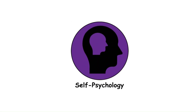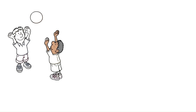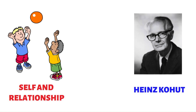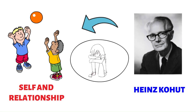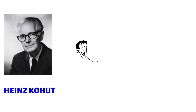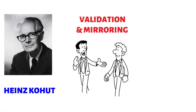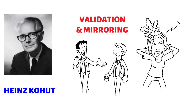Self-Psychology focuses on the development of the self and its relationship with others. Heinz Kohut emphasized the role of early relationships, particularly with caregivers, in shaping self-esteem and emotional well-being. Kohut proposed that individuals have basic narcissistic needs for validation and mirroring from others, and disruptions in these needs can lead to psychological difficulties.